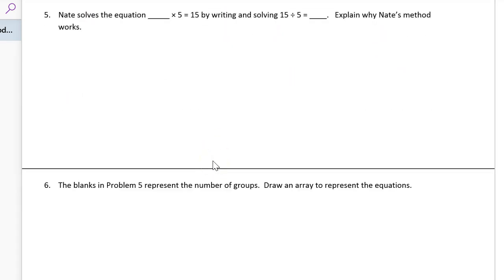Number 5, Nate solves the equation something times 5 equals 15. We have a missing factor. And then he does it by writing and solving 15 divided by 5 equals, and we have a quotient that's missing there. Explain why Nate's method works. Alright, so we have groups of 5 here. If we're looking at the missing factor problem, we've got an unknown number of groups, but there's 5 in each group.